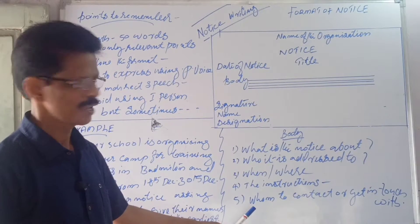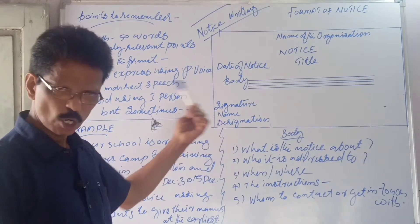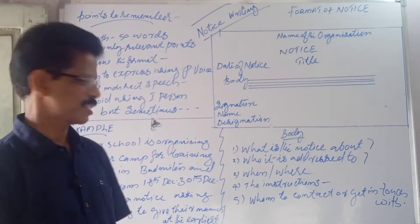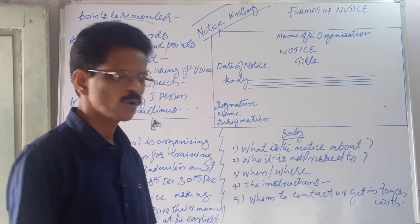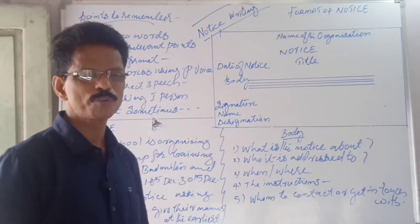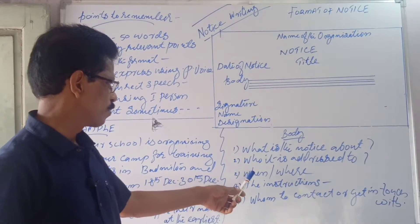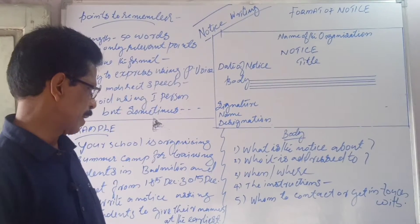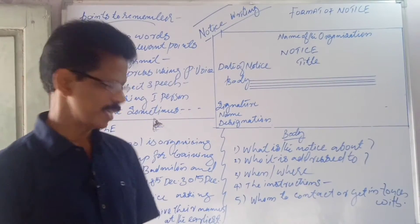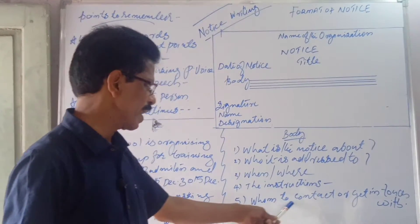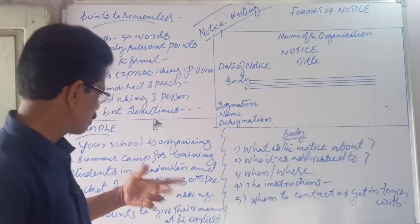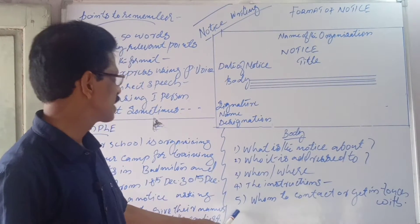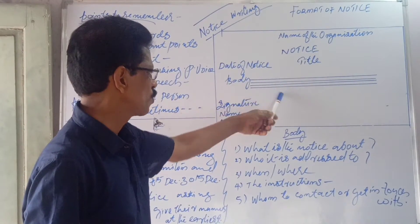So what is the notice about — there will be a subject matter. Who is addressed to — the students of your school, you can mention the name. Then place and time — where and when. Then the instructions given in the notice. And whom to contact or get in touch with, or whom to give your names to. All five of these things should be there while writing the body of the notice.